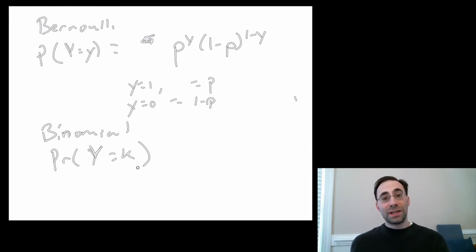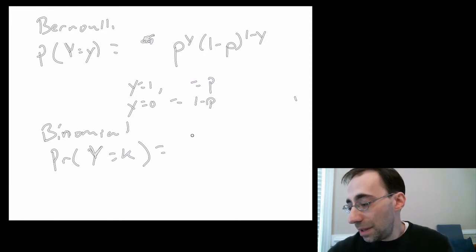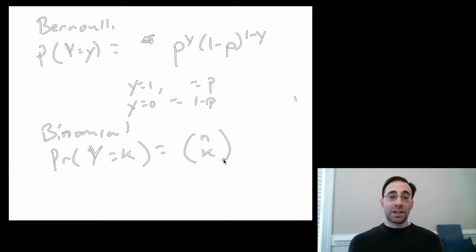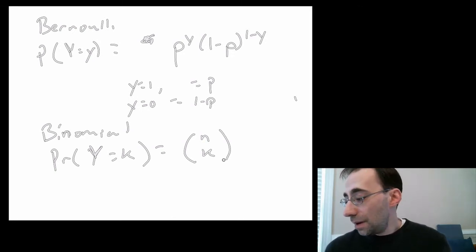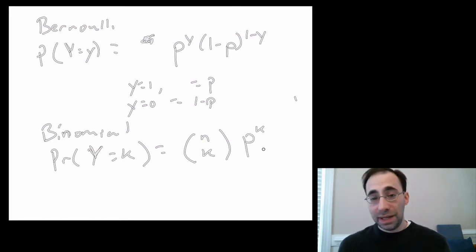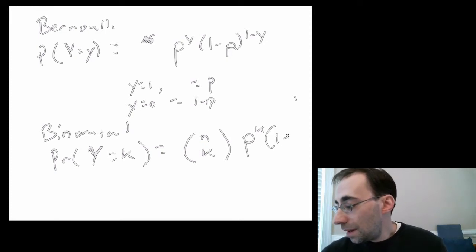So here, the probability that y, and y is going to be multiple trials here, equals k, where k is some number of positives, is going to be equal to n choose k times p to the k, and again p is the probability that you draw the one.